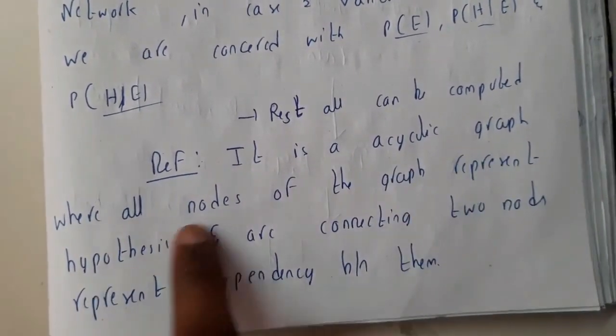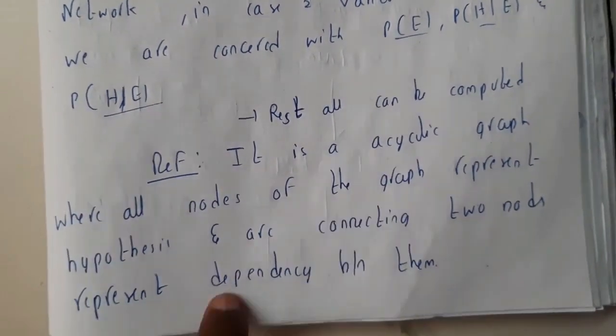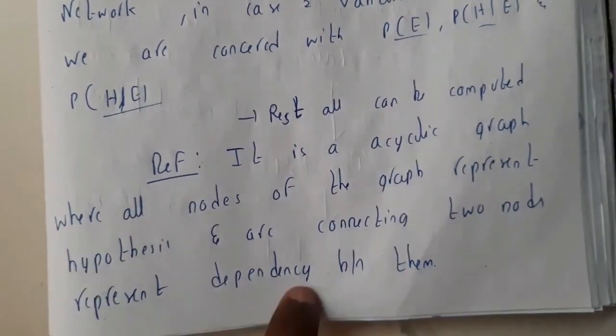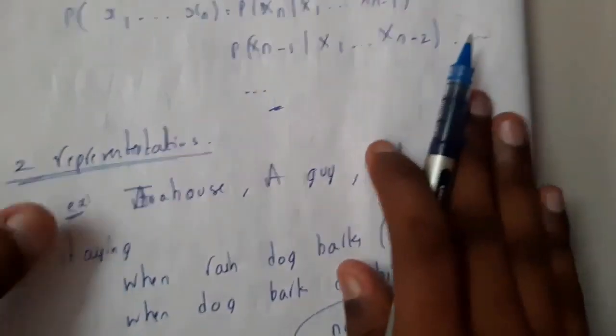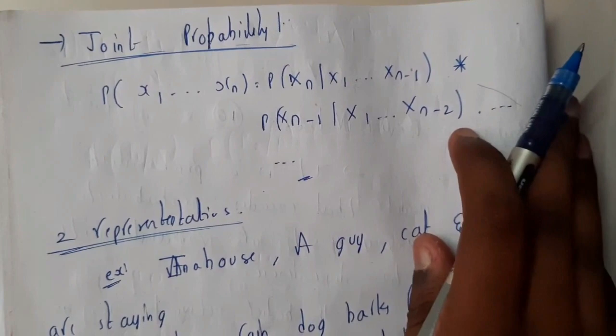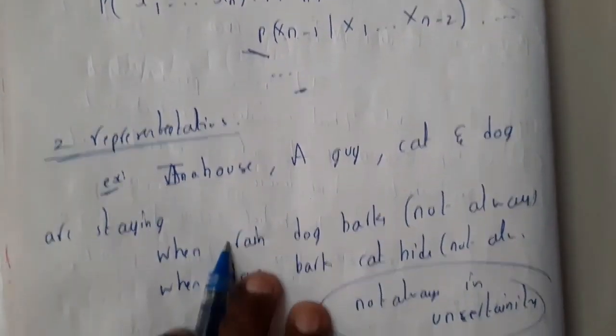The definition is: it is a directed acyclic graph where all nodes represent hypotheses and arcs connect two nodes representing dependency between them. Once we go through the diagram you'll have a clear idea. Here we will be using the concepts of joints which you'll understand once we solve this problem.